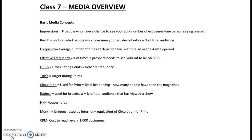TRPs is rating points, but for a specific target. Circulation, used for print, is total readership. Ratings is used for broadcast — the percent of the total audience that has viewed the show. HH stands for households. Monthly uniques, used by internet, is the equivalent of circulation for print: how many people, unduplicated, visited the website in a month? CPM: cost per thousand impressions.